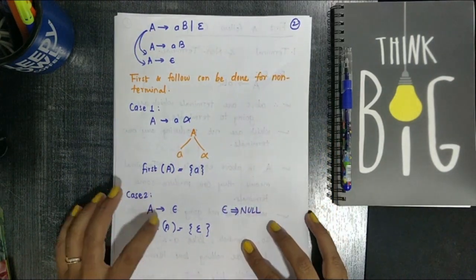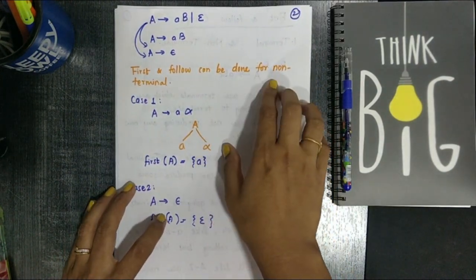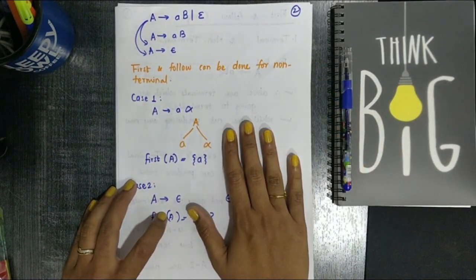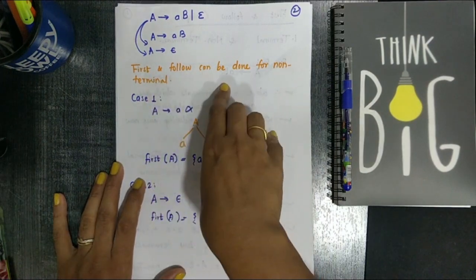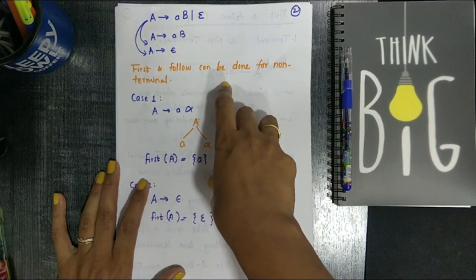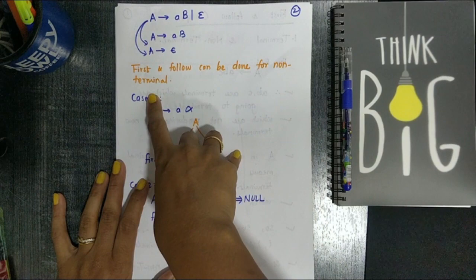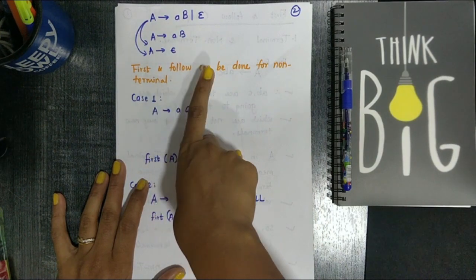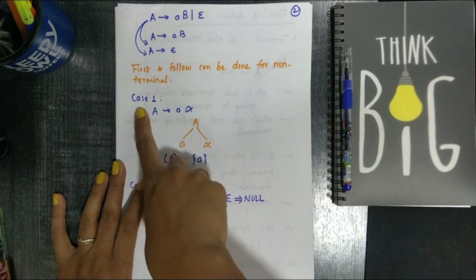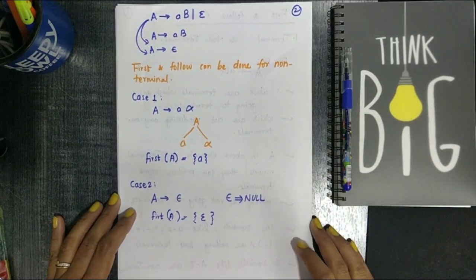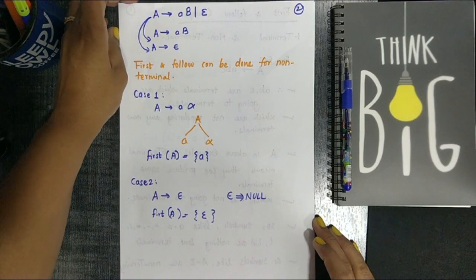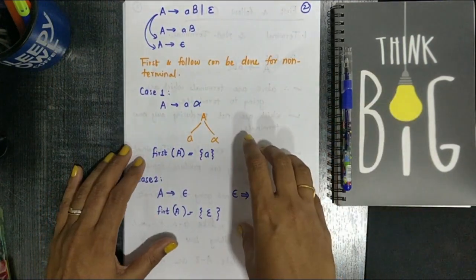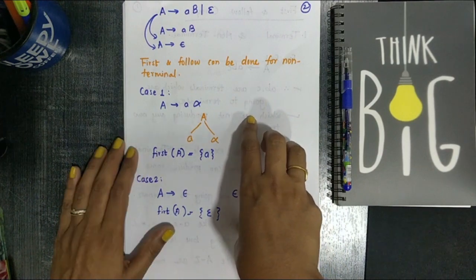First and Follow can be done for non-terminals only. First and Follow will be solvable if we are working on non-terminals — they are not for terminal symbols. Now we'll see the cases one by one for how First and Follow will be implemented.